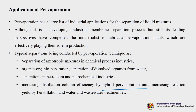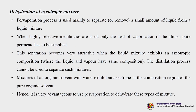One example is dehydration of azeotropic mixtures. The pervaporation process is used mainly to separate or remove small amounts of liquid from a liquid mixture. When highly selective membranes are used, only the heat of vaporization of the nearly pure permeate has to be supplied. This separation becomes very attractive when the liquid mixture exhibits an azeotropic composition where liquid and vapor have the same composition - the distillation process cannot be used to separate such mixtures.